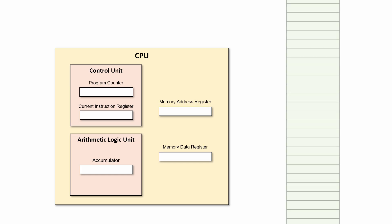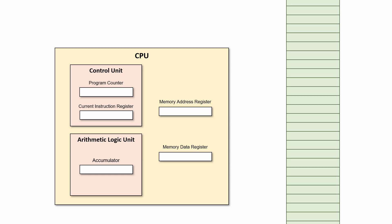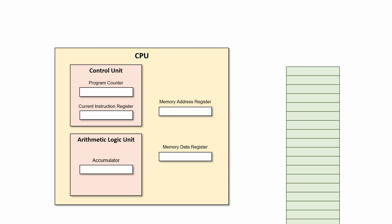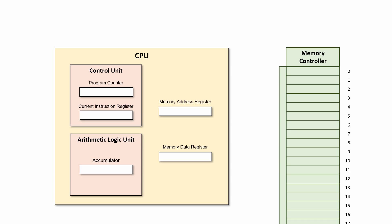A CPU on its own would be useless without the main memory to store programs and data. This is the random access memory, or RAM for short. The word random simply means it takes the same amount of time to fetch something from the memory regardless of where it is. Random access is just another way of saying direct access. All access to the memory is controlled by a circuit called the memory controller. Each memory location has an address, ranging from zero to something very large depending on how much memory is available. Even a typical 8GB of RAM has over 8 billion memory locations, and therefore over 8 billion memory addresses.